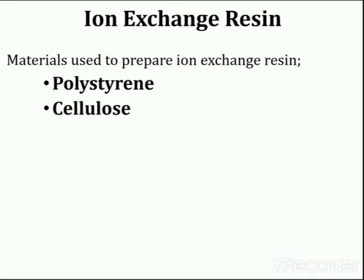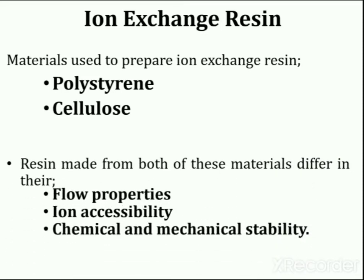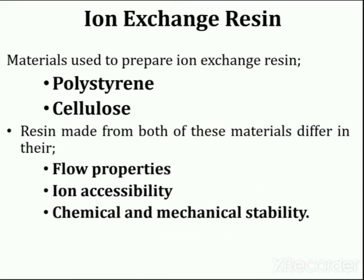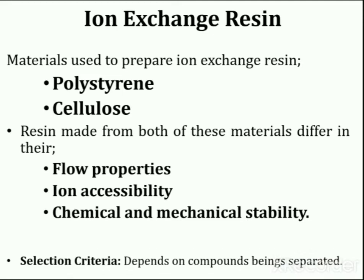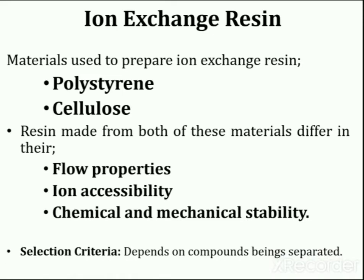Two main groups of materials are used to prepare ion exchange resin. These include polystyrene and cellulose. Resin made from both of these materials usually differ in their flow properties, ion accessibility and chemical and mechanical stability. Selection of one or the other type of resin is done on the basis of compounds being separated.